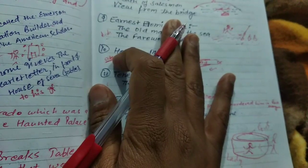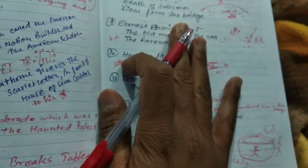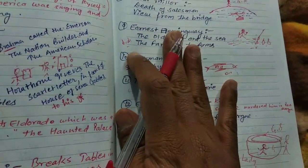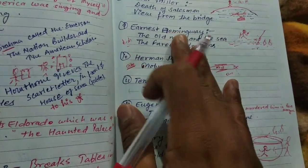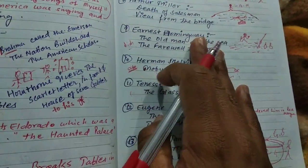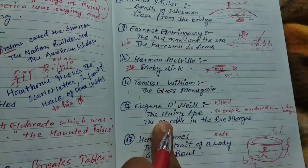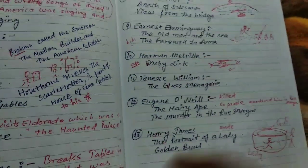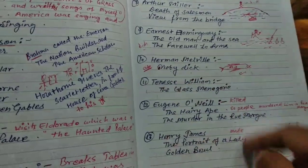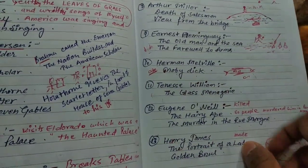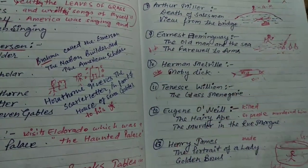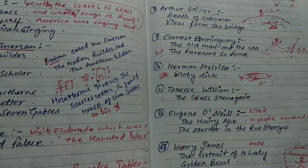Let me ask you — who was making the portrait of a lady on a golden bowl? Henry James. Now next one: who killed the hairy ape? Eugene O'Neill. Remember the name first and then learn the shortcuts — it will help you in your MCQs. Bye-bye, take care, see you in the next video.